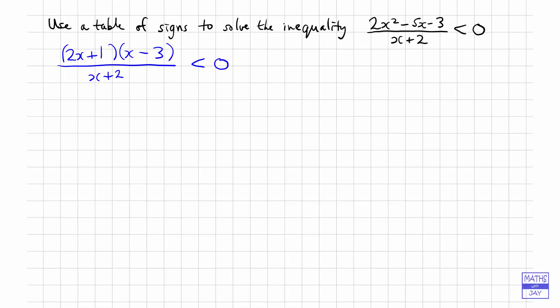So now we only have linear factors. And the important thing is to note down where each of them is equal to 0. So let's start with 2x plus 1. So 2x plus 1 is 0 when 2x is minus 1, or when x is negative 1 half. x minus 3 is 0 when x is 3.